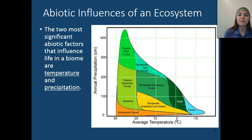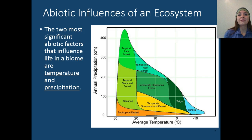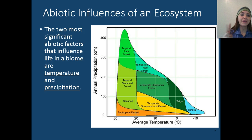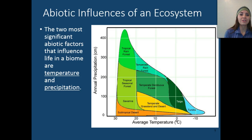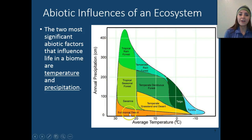What are the abiotic influences of an ecosystem? Biotic means living, and abiotic means nonliving. Nonliving factors contribute to the ecosystem's properties. The two most significant abiotic factors that influence life in a biome are temperature and precipitation. The higher the precipitation and the higher the temperature, the more biodiversity we're going to have.